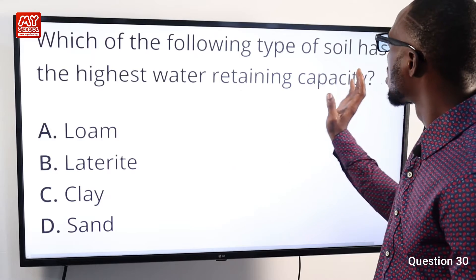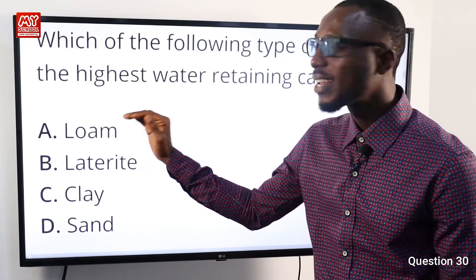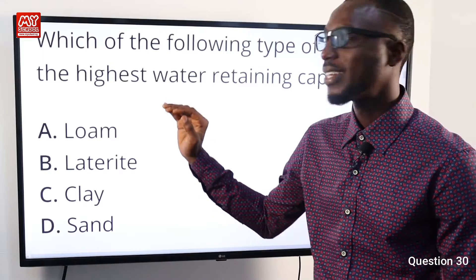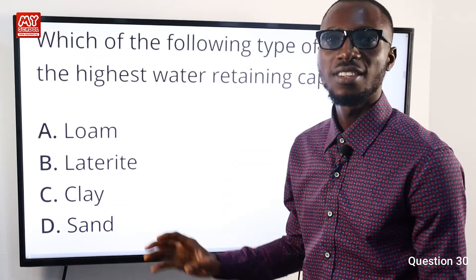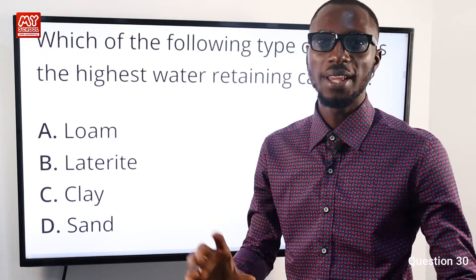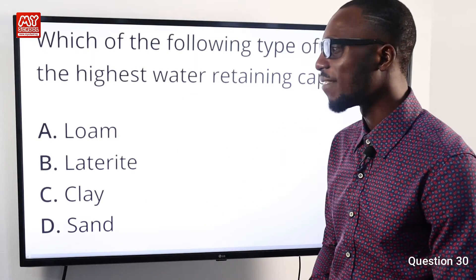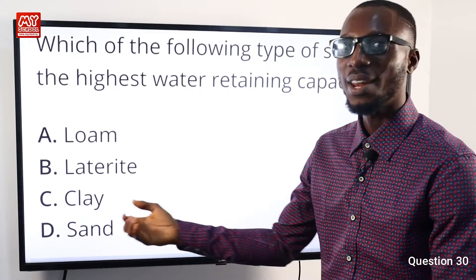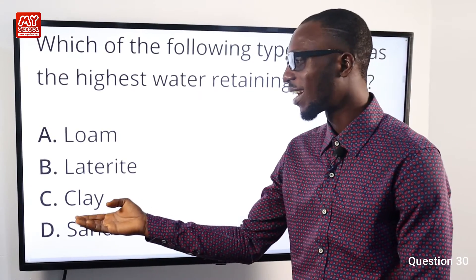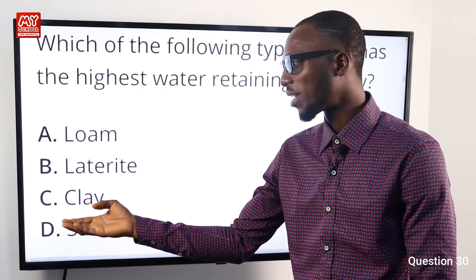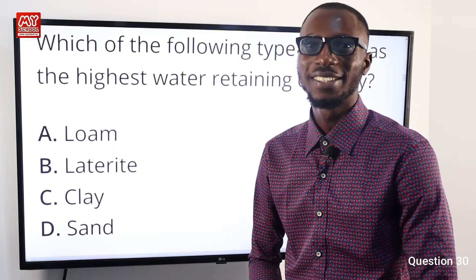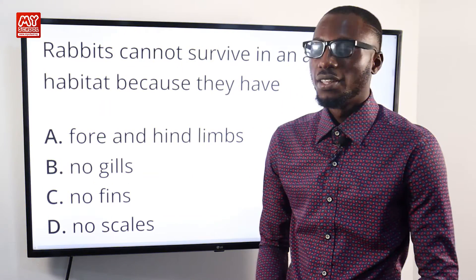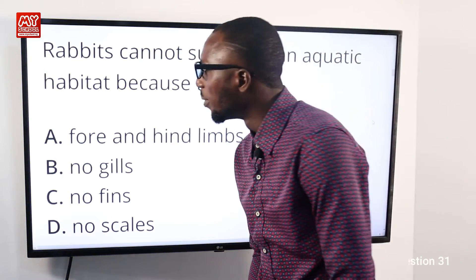Question 30: Which type of soil has the highest water-retaining capacity? This is due to the small air spaces or pores available in that kind of soil, and that kind of soil is clay soil. So option C is correct.